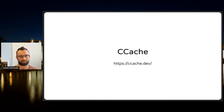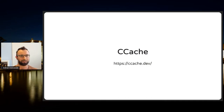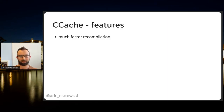In essence, Ccache is a compiler cache. It remembers the results of compilation — the object files — and if you recompile a source file with the exact same compiler and flags, you get a cached object file instead of compiling a new one. The main feature is much faster recompilation, and it supports C, C++, Objective-C, Objective-C++, CUDA, and assembly.